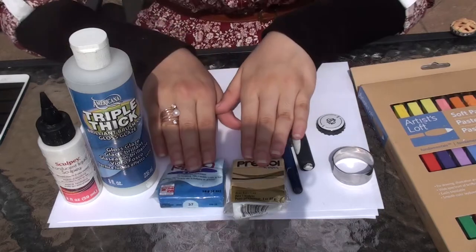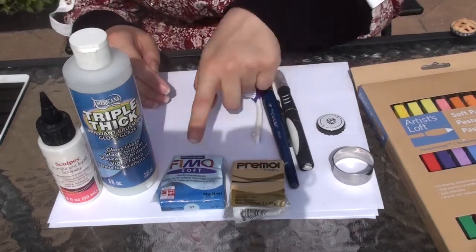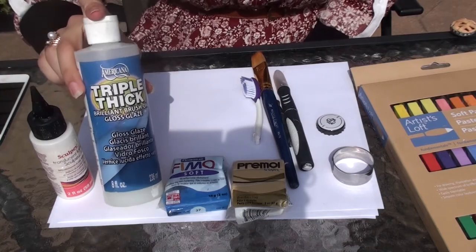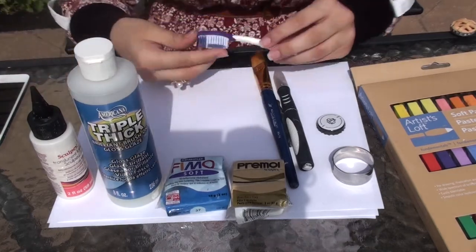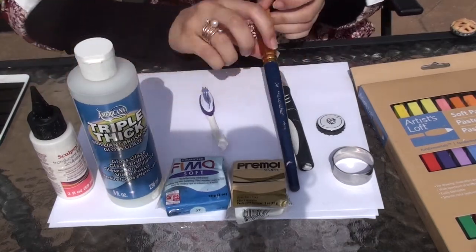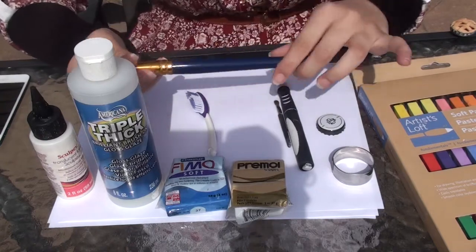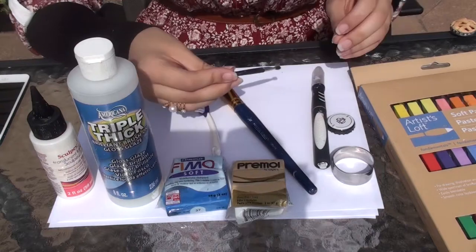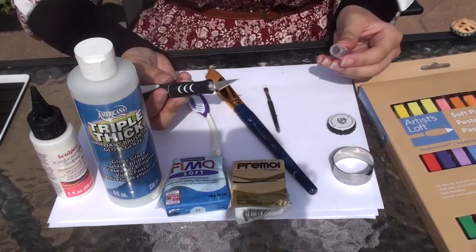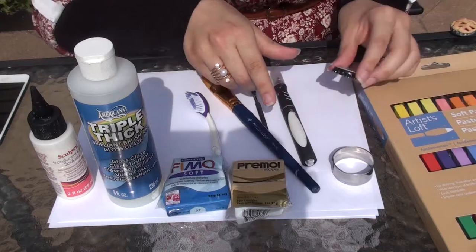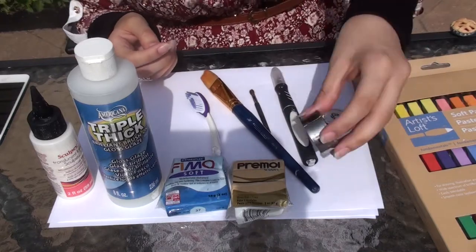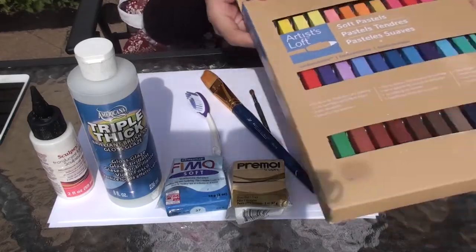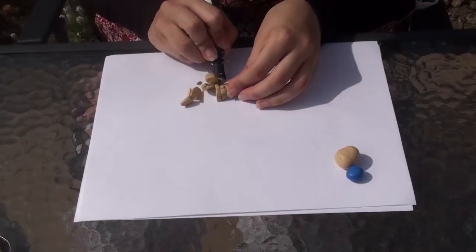The things you will be needing today are polymer clay in ecru and blue, translucent liquid Sculpey, clear brush-on glaze, a toothbrush for texturing, a rolling pin - I'm using this paintbrush as one - a small paintbrush, a blade or exacto knife for cutting the clay, a bottle cap, a circle cutter that's slightly larger than the bottle cap, and chalk pastels. You'll also need a toothpick, parchment paper, and some aluminum foil.